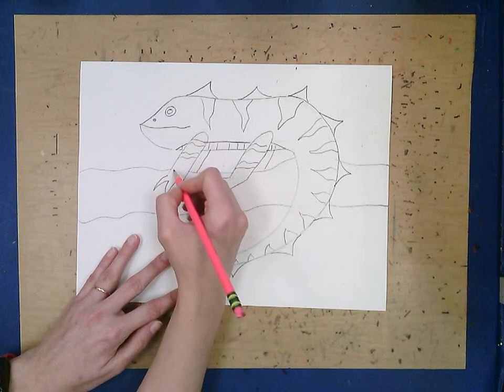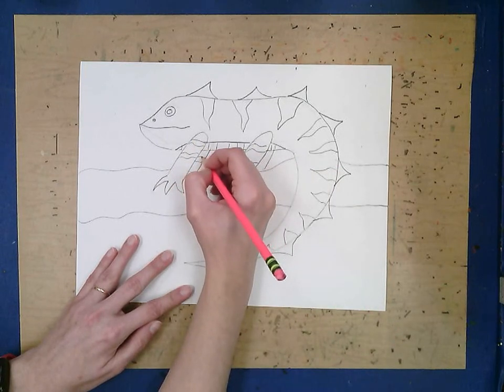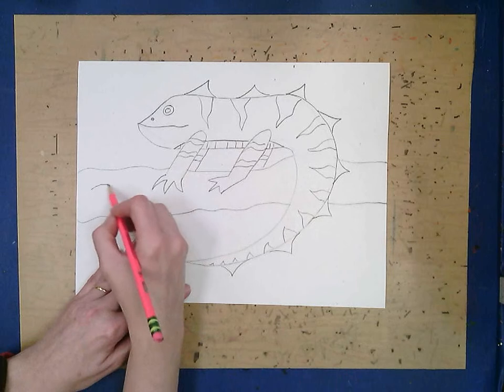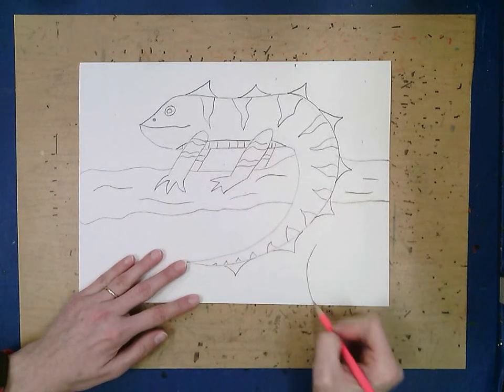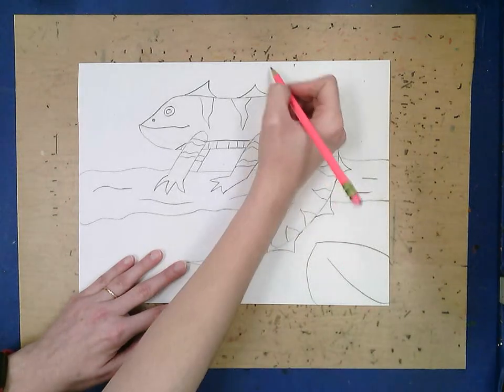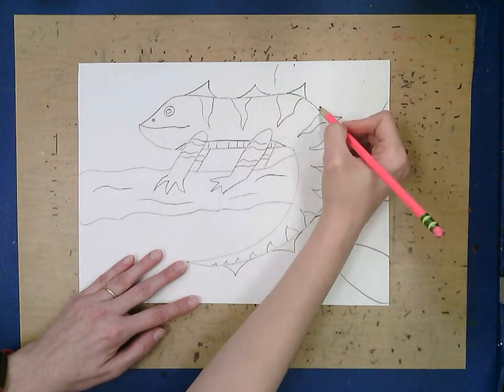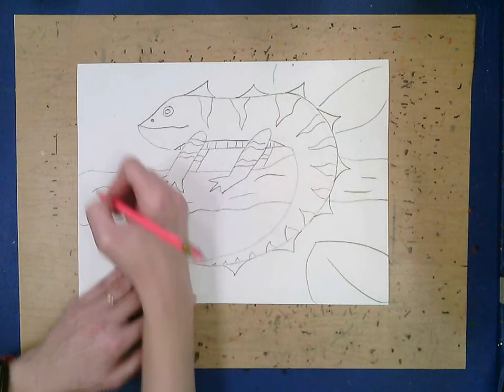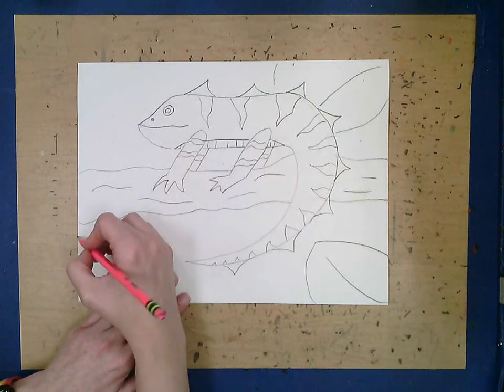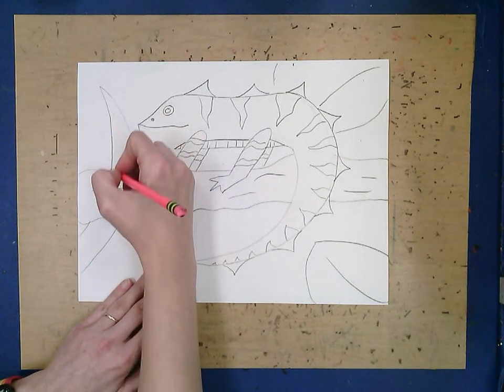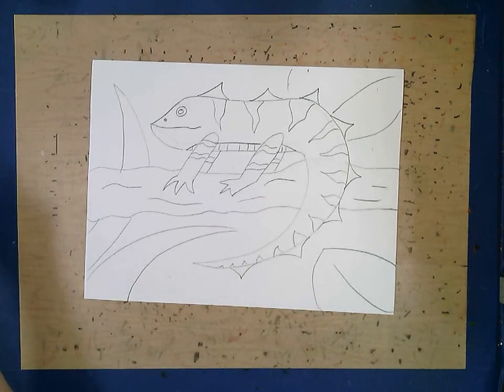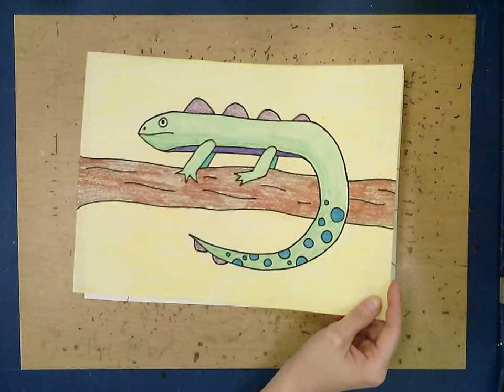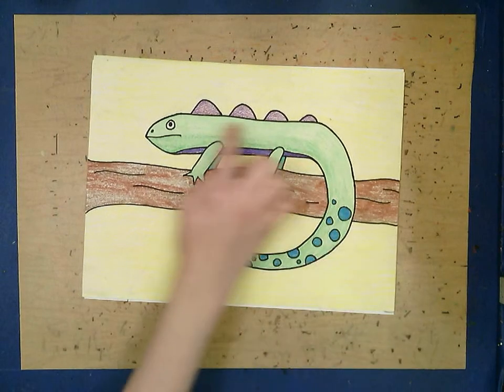There we go. Now once you are happy with the way your iguana looks, you can add some details to the background. Maybe there's some leaves poking out around this little guy, or maybe it's sunset. There's a lot of different things you could do. There's a lot of different colors to fill it in and make it interesting.